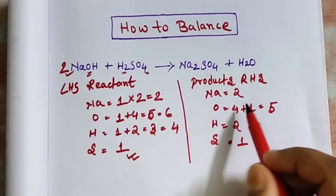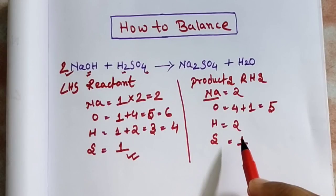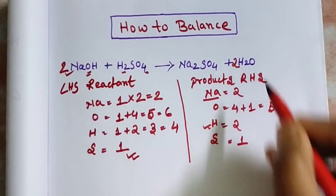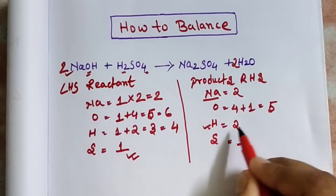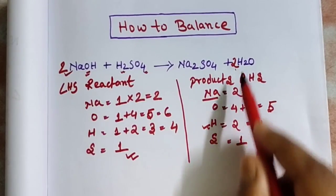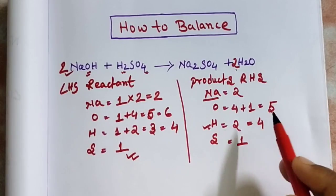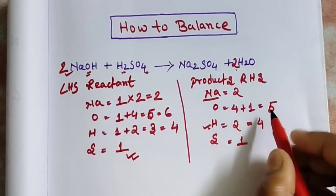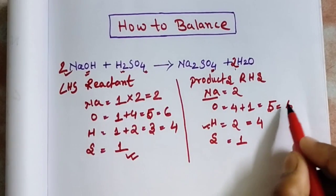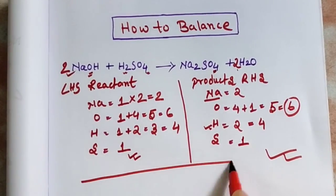For RHS, sodium is balanced but oxygen and hydrogen are not. To balance hydrogen, put two in front of H₂O — hydrogen became four: two plus two total four. Now update oxygen: two plus four so total oxygen became six. Now this equation is balanced. Thanks for watching.